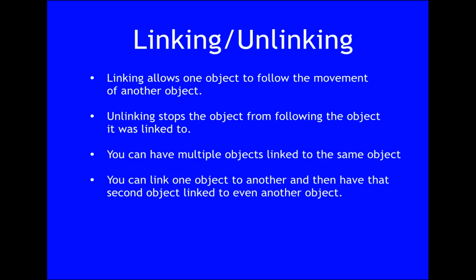In summary, we've seen that linking allows one object to be connected to another one, and that object will then follow the movements of the one it is linked to. This is useful so you don't have to coordinate the movement of the linked object to the object you're trying to follow. You just link them up and it automatically follows. And when you unlink it, it stops following that object. Also, you can have multiple objects linked to the same object. As an example, you could put a hat on an actor and have that hat linked to its head, and also put glasses on the actor and have the glasses linked to the head. So anytime the head moves, the glasses and the hat will follow.